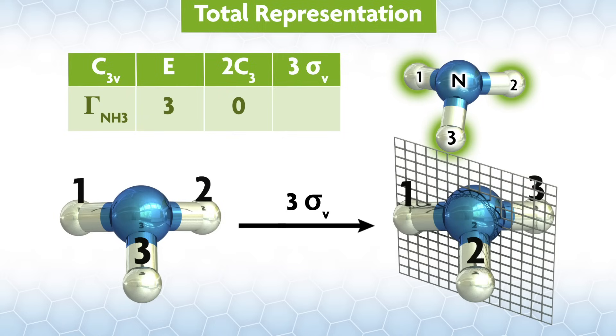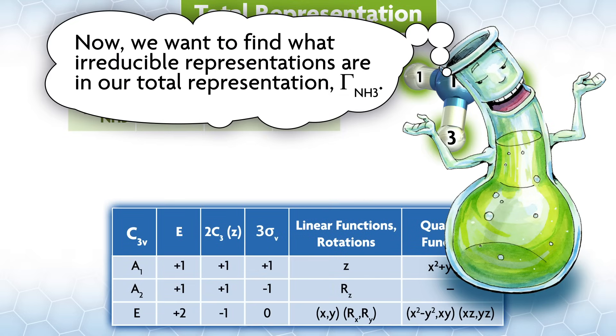If we look at one of the planes of symmetry, say the one coincident with the NH1 bond, we will find that the S1 orbital stays the same, which gives plus 1 for that part of the basis, and S2 and S3 exchange positions, which gives zero for them. So, we write plus 1 for what happened overall.